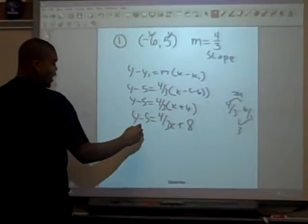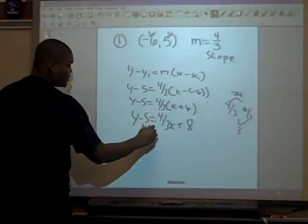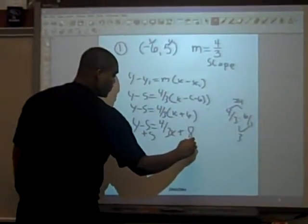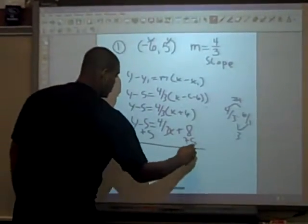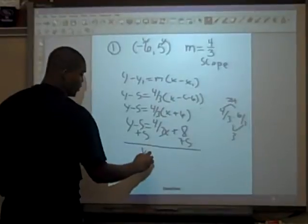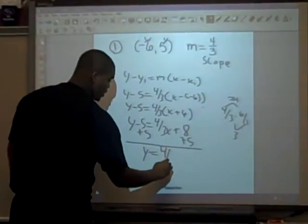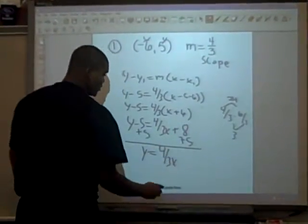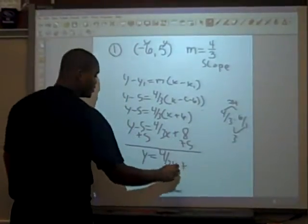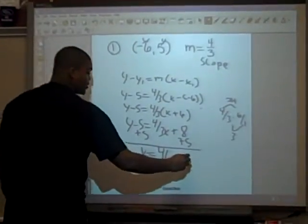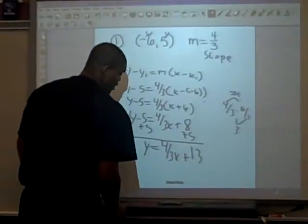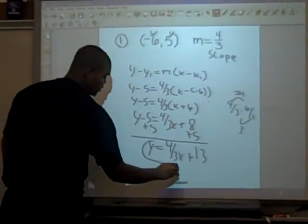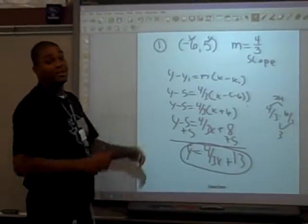From here, we add 5 to both sides, and we get Y equals 4 thirds X plus 13. And right there, is your point slope form.